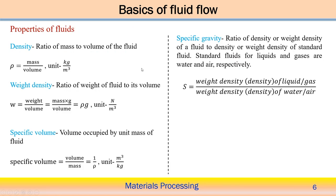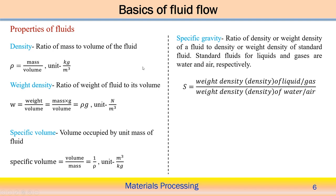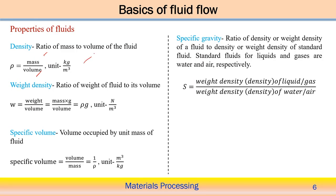With this concept we can derive different equations, but first we need to know the fluid properties associated with flow analysis. Density is the ratio of mass to volume of the fluid — mass divided by volume — with SI unit kg per meter cube. Weight density is the ratio of the weight of the fluid to its volume: mass times g divided by volume, which gives rho times g, with unit Newton per meter cube. Specific volume is the volume per unit mass — volume divided by mass — equal to 1/ρ, with unit meter cube per kg.